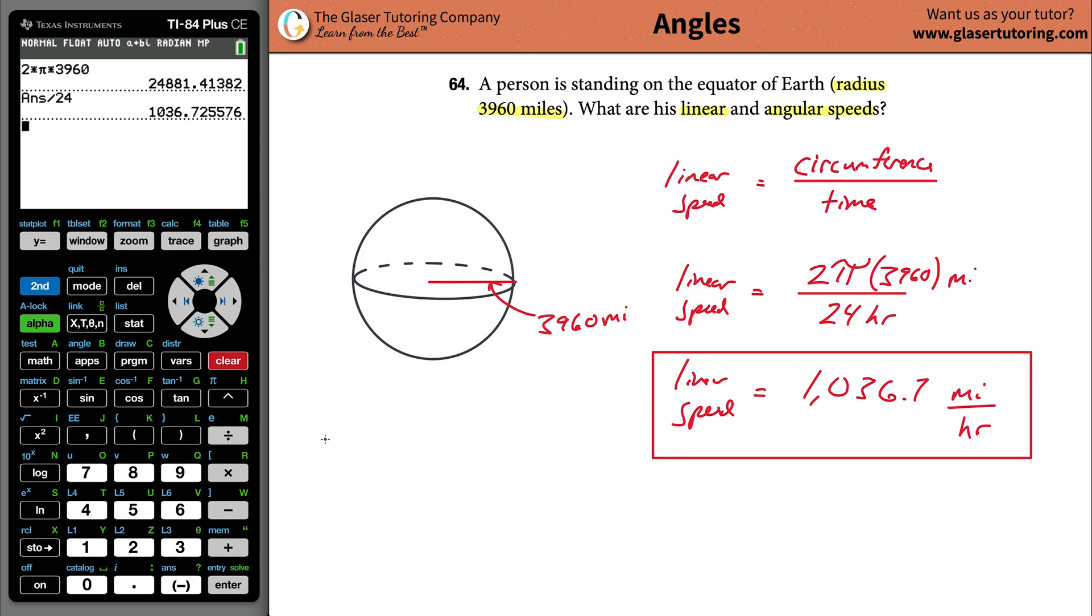And then we got to find the angular speed. Anytime you're calculating angular speed, let's change the color. Angular speed is simply going to be the number of revolutions, or number of radians, it depends on what unit you need. Number of revolutions divided by the time it takes to cover the number of revolutions.